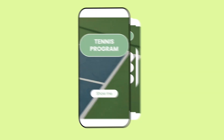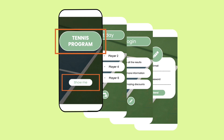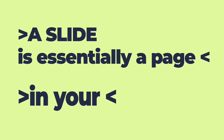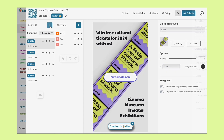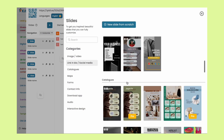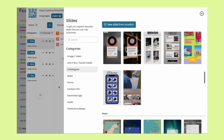Hey there kiter! In this tutorial we're going to talk about two key components of your kite's editor. The first thing you need to know is that a kite is mainly made up of slides and elements. A slide is essentially a page in your kite. You can add as many slides as you want and choose how your audience navigates between them.